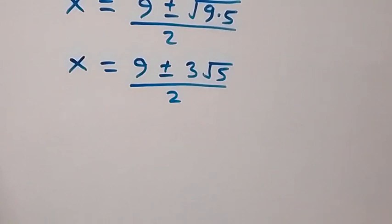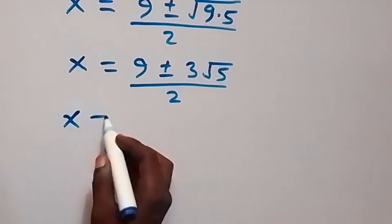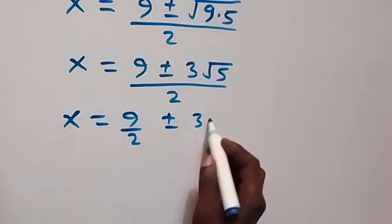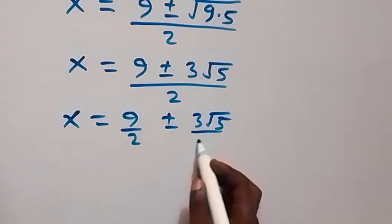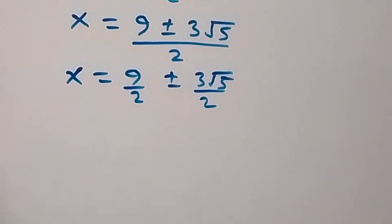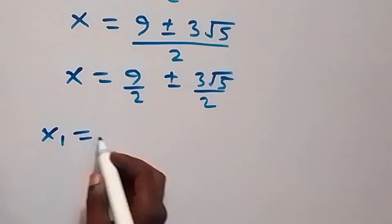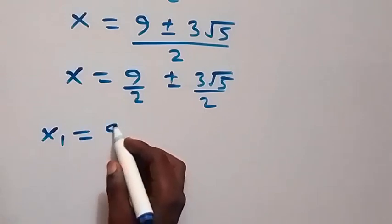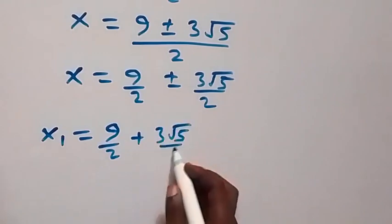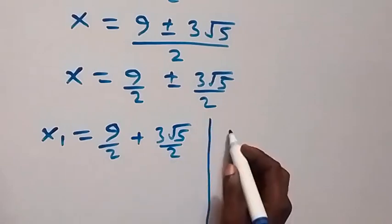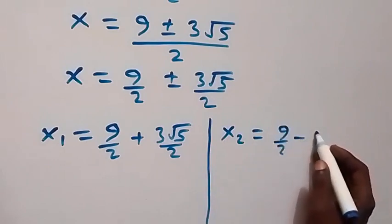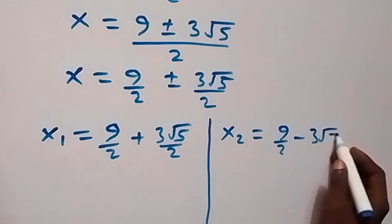We can separate this as x equals to 9 over 2 plus or minus 3 root 5 over 2. That is, from here we have two possible values of x: x1 equals to 9 over 2 plus 3 root 5 over 2, and x2 equals to 9 over 2 minus 3 root 5 over 2.